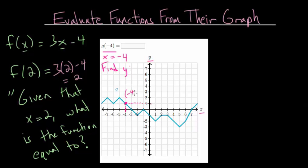So when x is minus 4 for our function g, the y value or the function value is equal to 1. So we would put 1 into this box here.